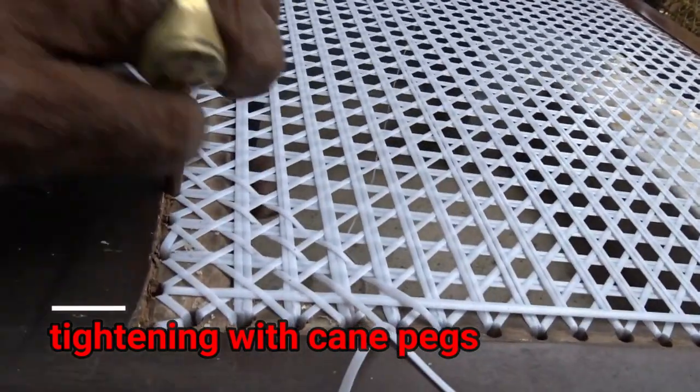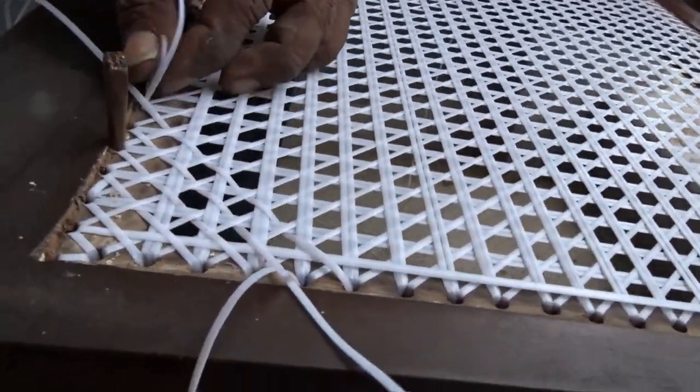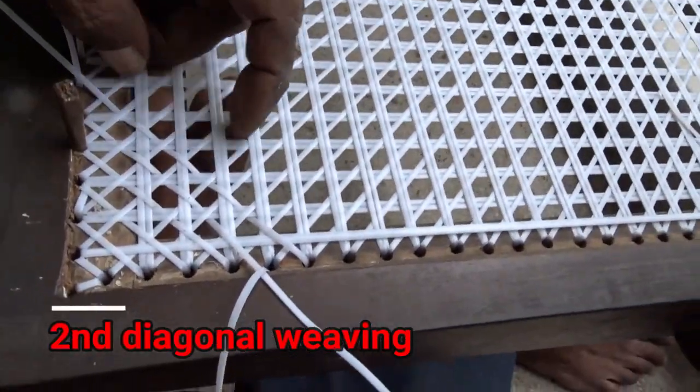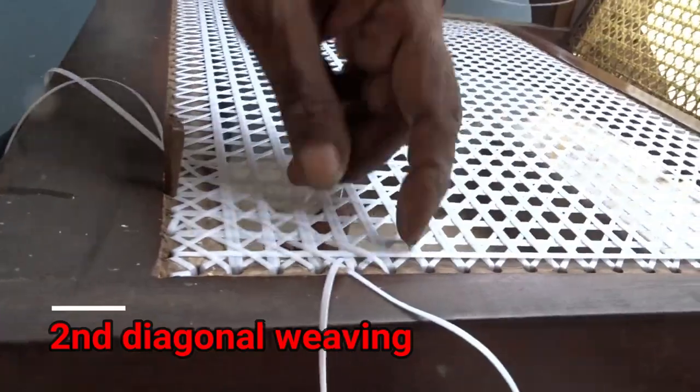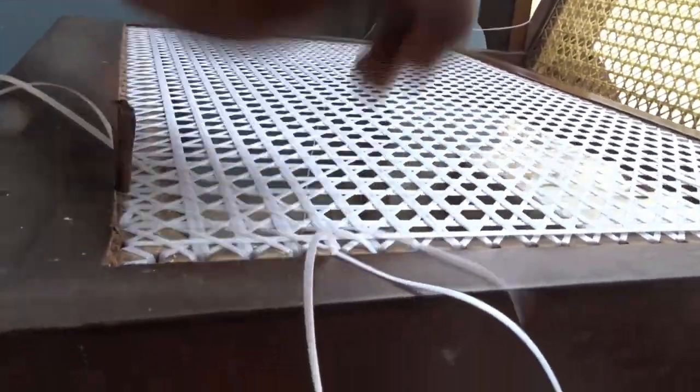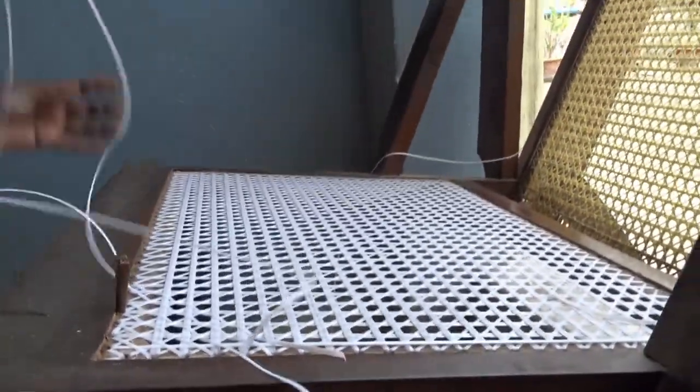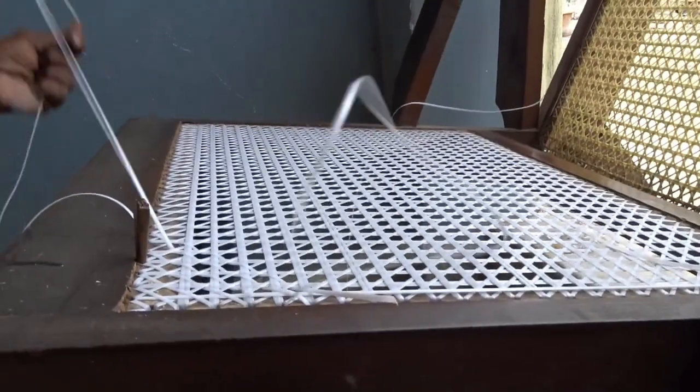The fifth and the last step is to again weave in a diagonal direction. But this time from a different side. After this the weaving will be complete.